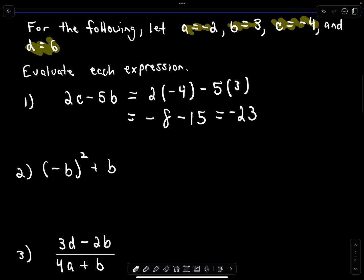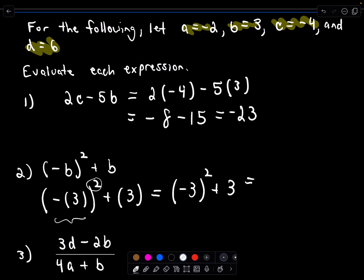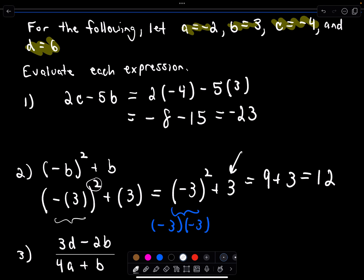Here we need to be a little careful. There's the outer set of parentheses, and then we have a negative, and it says we're plugging in 3 for b and squaring it, plus 3. People sometimes get confused with signs and exponents. Inside the parentheses we still just have negative 3 being squared. Negative 3 squared means negative 3 times negative 3, which is positive 9. Adding the remaining positive 3 gives us positive 12.